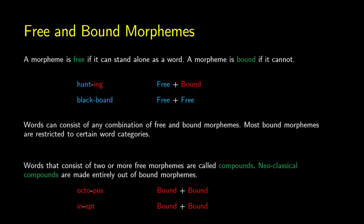Now we can talk about different types of morphemes. We have free morphemes and bound morphemes. A morpheme is free if it can stand on its own; a bound morpheme cannot. For example, in 'hunting', you can say 'hunt' on its own — that's a free morpheme — but you can't say 'ing' on its own. That's not a full word, so 'ing' is a bound morpheme. You can create words from a combination of free and bound morphemes.